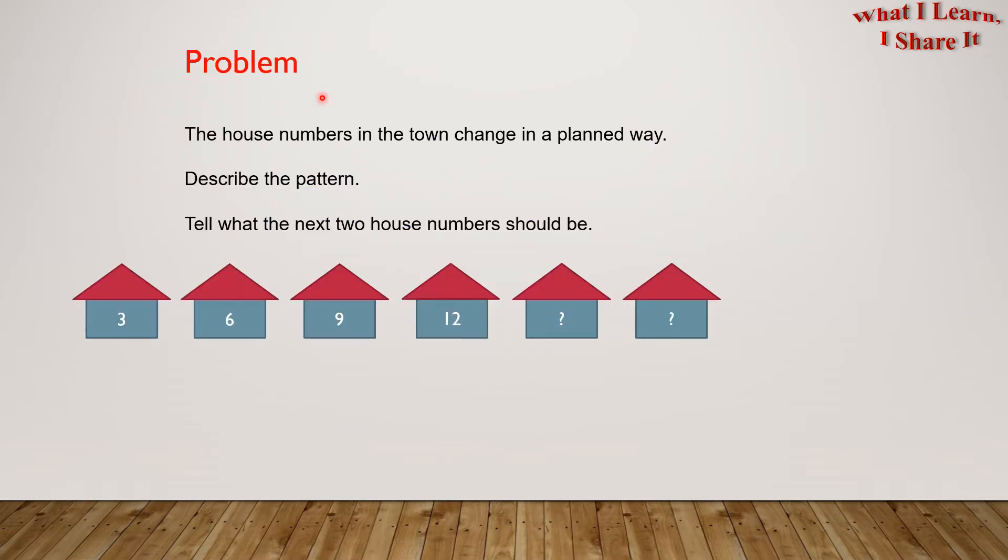Here is a problem to help us understand the strategy. The house numbers in the town change in a planned way. Describe the pattern. Tell what the next two house numbers should be.